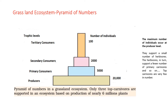If you observe a grassland ecosystem, the producers — grass, trees, or anything — are around 20,000 in number. The primary consumers like grasshoppers or rats are less in number compared to producers, so imagine they are around 5,000. The secondary consumers, which depend upon primary consumers for food, are around 2,000 — for example, if primary consumers are grasshoppers, the secondary consumer could be a frog; if rats, then a snake. The tertiary consumers at the apex are around only 100.